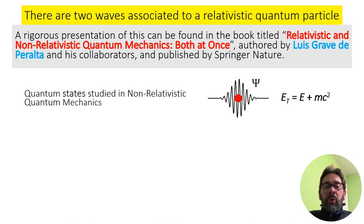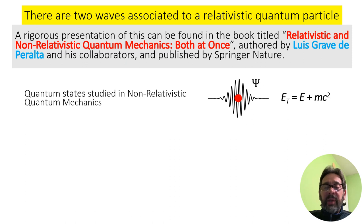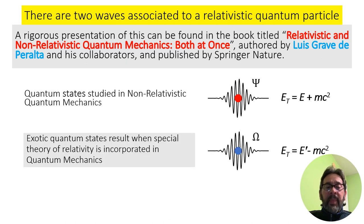Quantum states studied in non-relativistic quantum mechanics correspond to one of the waves, where the energy of the particle is E plus MC². An exotic quantum state is revealed when the special theory of relativity is incorporated into quantum mechanics. The energy of the particle in this exotic state is E prime minus MC².